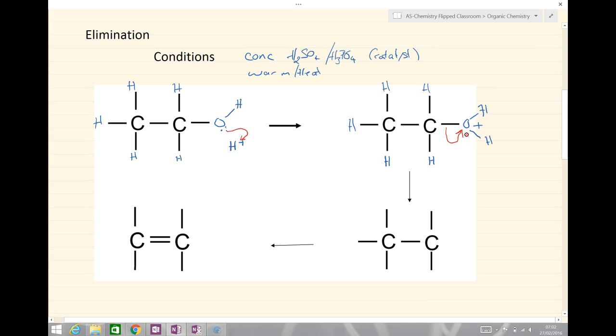What that means is we end up with a situation where we have a carbon with a positive charge on it. So we have a carbocation forming. This carbocation is relatively unstable. And the carbocation will form on the most stable carbocation as preference. This is an example here of a primary carbocation.